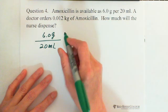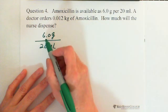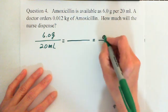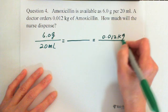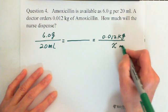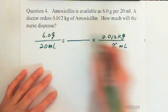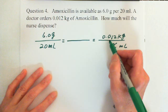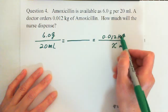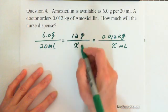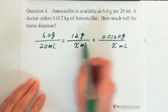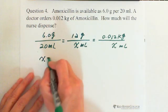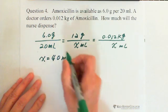For every 20 milliliters, the medicine concentration is 6 grams. But we need 0.012 kilograms — how many milliliters is that? These two units don't match, so we need to convert kilograms to grams. From big unit to small unit, we multiply by 1,000 — move the decimal three places — so 0.012 kilograms becomes 12 grams. We can see 6 to 12, so multiply by two, giving x = 40 milliliters. You can also do cross multiplication — same result.